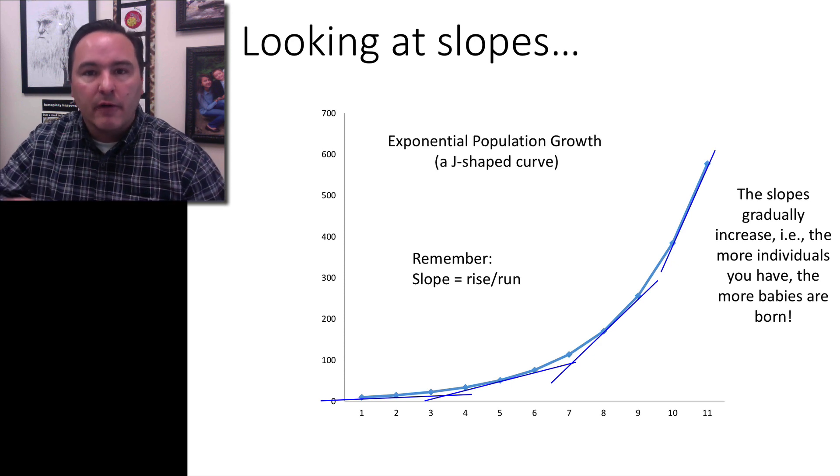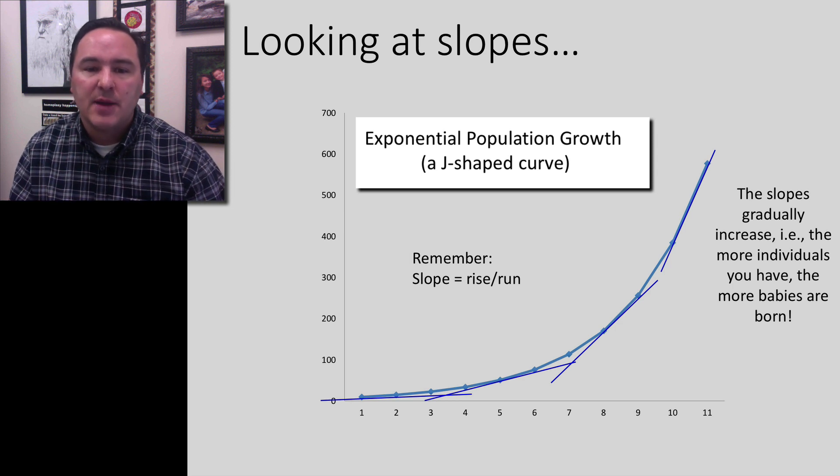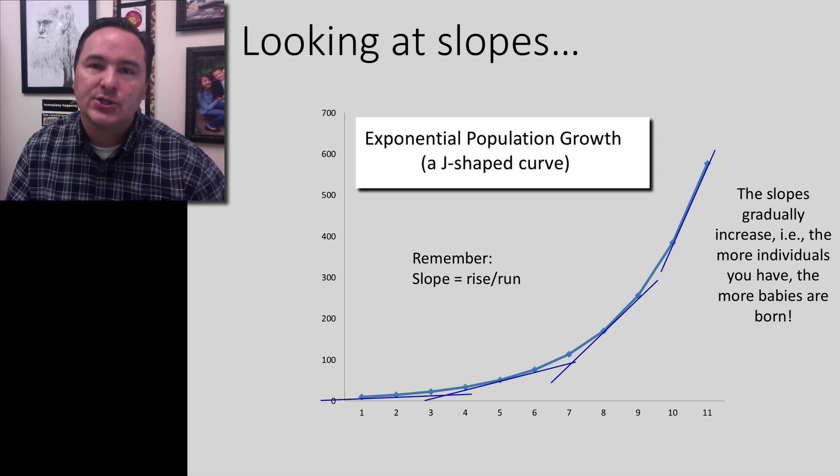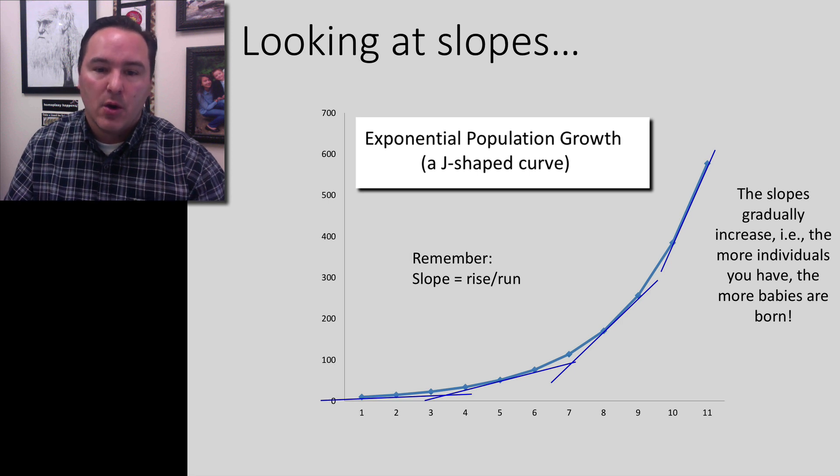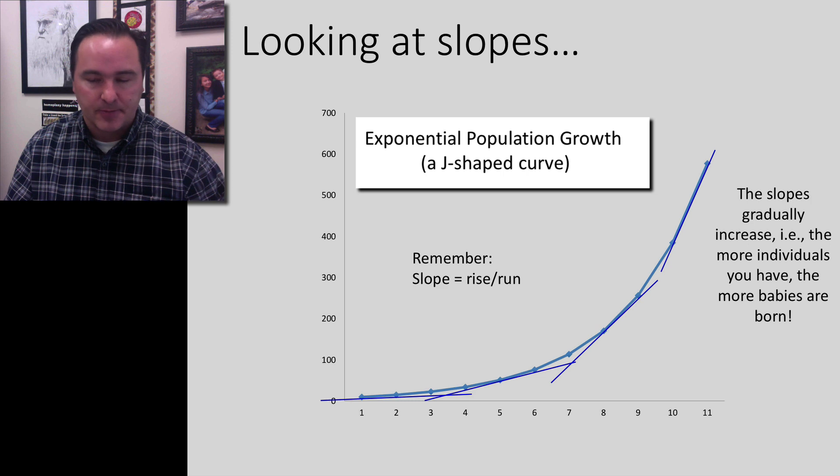This type of curve we're forming here has a J-shape. A J-shaped curve is also called an exponential growth curve, or when we're talking about ecology, exponential population growth is what we're describing.